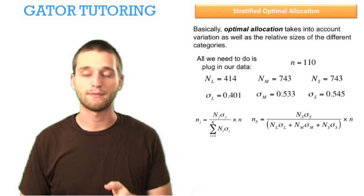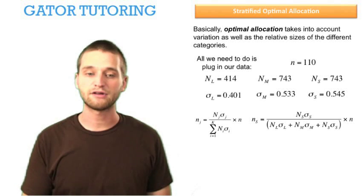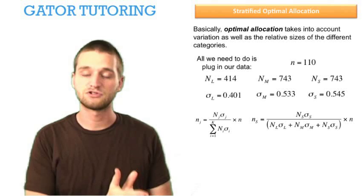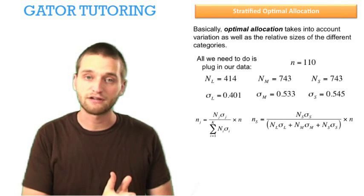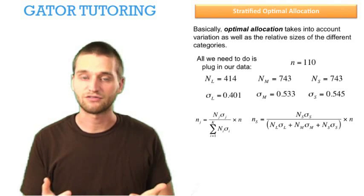But first, let's expand this sum on the bottom to see where all of our numbers go. So, we're calculating, the formula says n sub j equals. So you're looking for the new sample size in the jth strata. So j is like our target, basically.